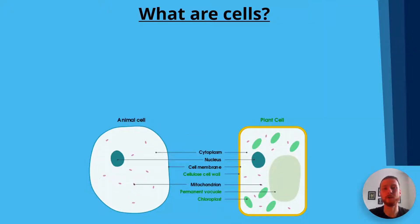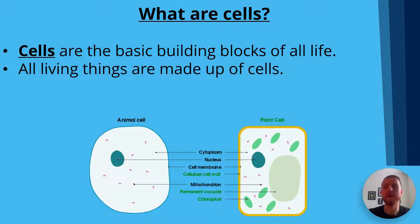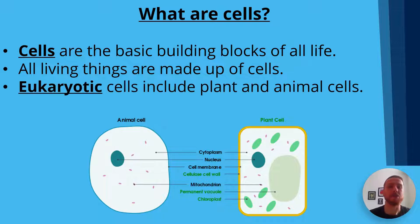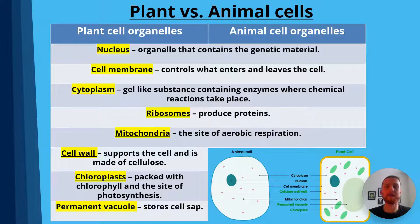What are cells first of all? Well, cells are the basic building blocks of all life. We're made up of around 10 to 100 trillion cells. All living things, everything on earth is made up of cells. Eukaryotic cells include plant and animal cells, and you need to know about both types for GCSE science. Prokaryotic cells include bacteria, and I'm going to cover more on that later in the video. We've got to cover how plant cells are different to animal cells. Remember, they're both eukaryotic cells.